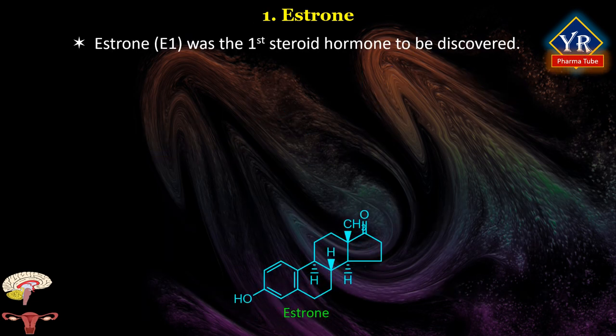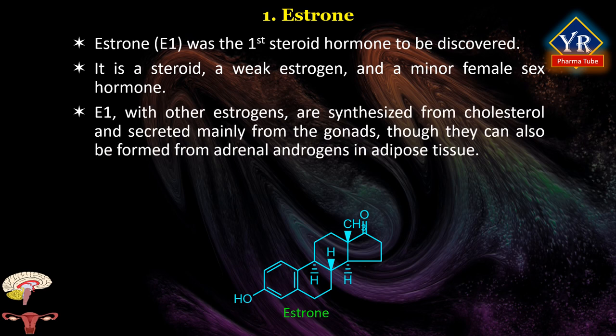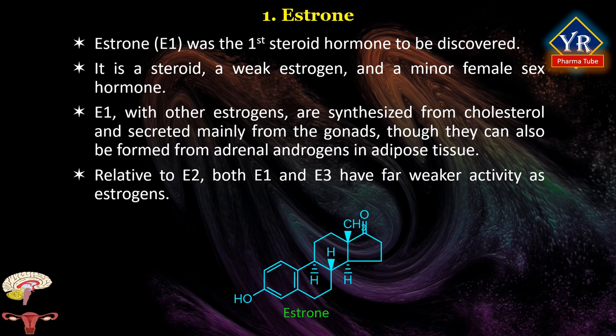Estrone was the first steroid hormone to be discovered. It is a steroid, a weak estrogen, and a minor female sex hormone. It is one of the three major endogenous estrogens, the others being estradiol and estriol. Estrone and other estrogens are synthesized from cholesterol and secreted mainly from the gonads, though they can also be formed from adrenal androgens in adipose tissue. Relative to estradiol, both estrone and estriol have far weaker estrogenic activity.